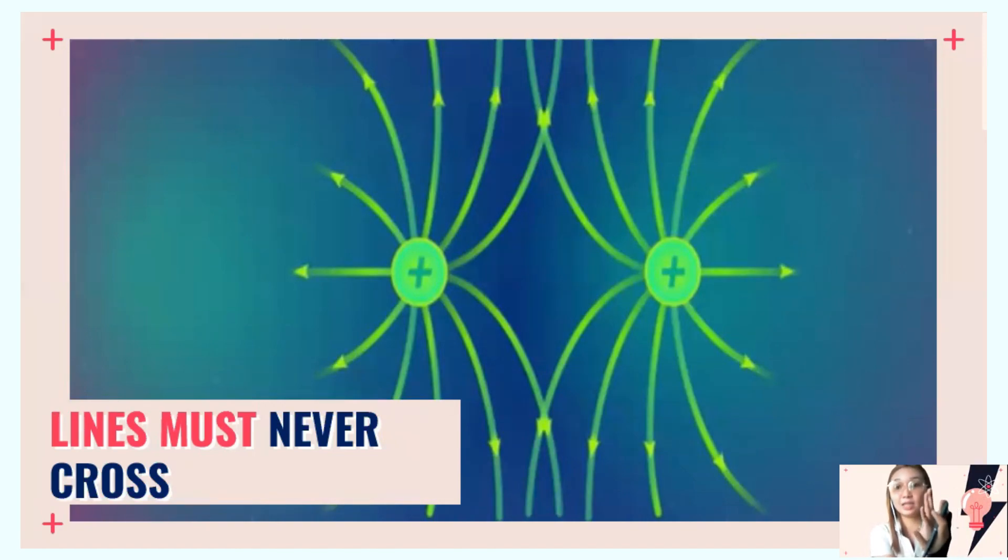But it will never happen that they're both positive or both negative and their lines crisscross. That's not possible with electric field lines because, according to electrostatic force, we need to illustrate properly that like charges repel one another.